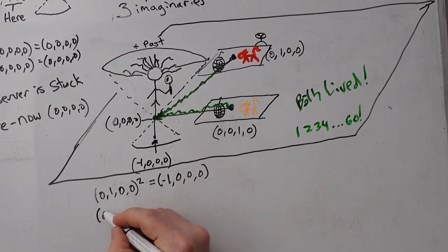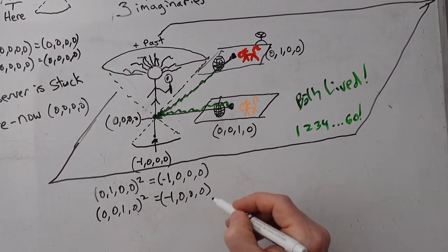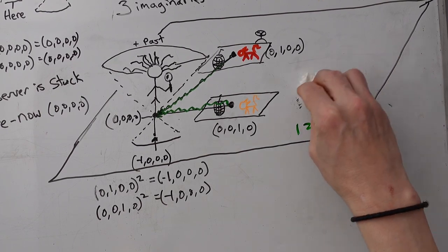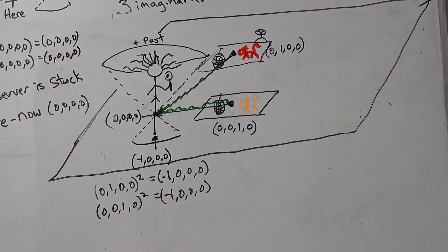So if we square this 0, 1, 0, 0, we get minus 1. Einstein gets it in the future, one unit later. Okay. So we're going to repeat the experiment.